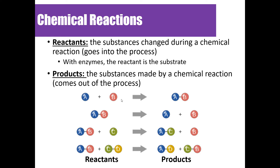Let's talk just a little bit about chemistry. Reactants are the substances that are changed during a chemical reaction — this is what goes into the process. Now specifically with enzymes, the reactant is going to be known as the substrate. In chemistry we call them reactants, but in biology we refer to them as the substrate. You also have products, which are the substances made or created by the chemical reaction — what comes out of the process.